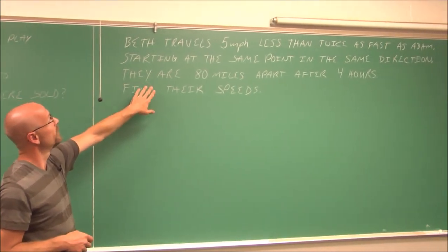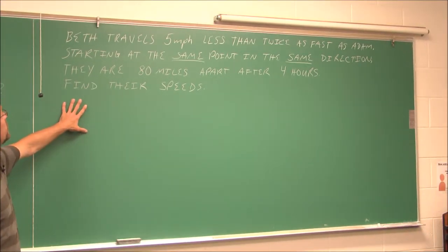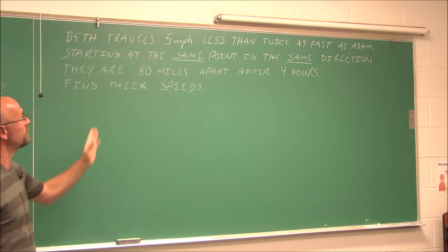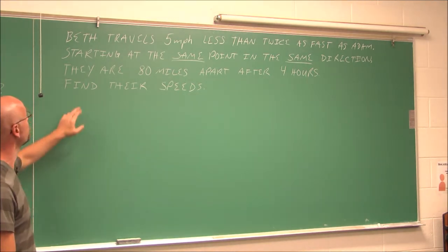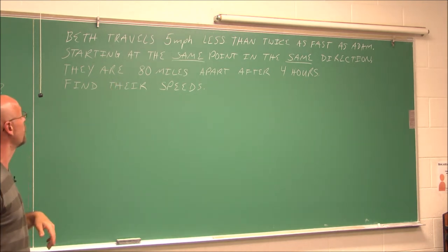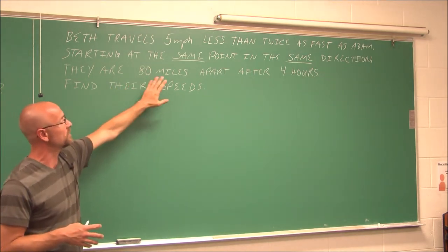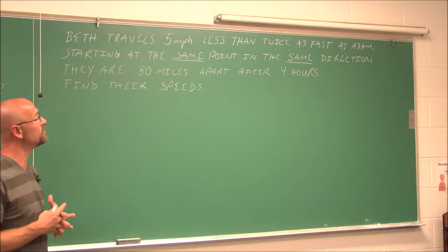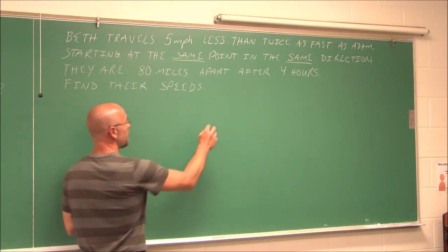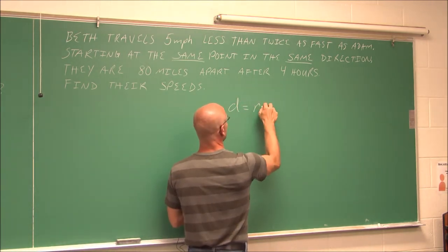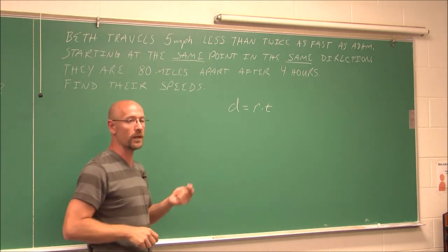All right. Here we have one more application. It says, Beth travels 5 miles per hour less than twice as fast as Adam. Starting at the same point in the same direction, they are 80 miles apart after four hours. Find their speeds. So if we think about what's happening here, we're given something about rates, and we're given something about distance, and a time of four hours. What we have to do here is bring something to the table. And that equation that relates all three of these pieces of information is this equation right here. Distance equals rate times time.